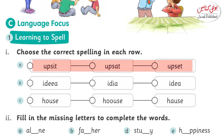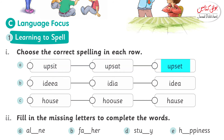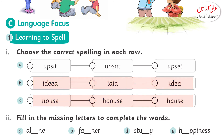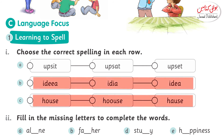Spell karke bataiye. U-P-S-I-T — no. U-P-S-A-T — no. U-P-S-E-T — yes, it's the correct spelling. Isi tarah yahaan pe aapas word diya gaya hai: 'idea' or 'house'. Iske sahih spellings aap chapter ke andar ye words dhoondiye aur wahaan se dekhiye.